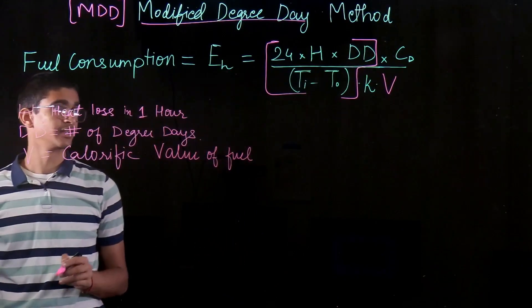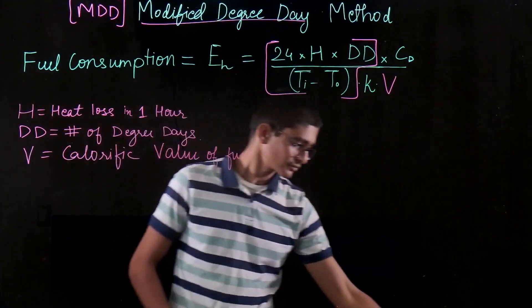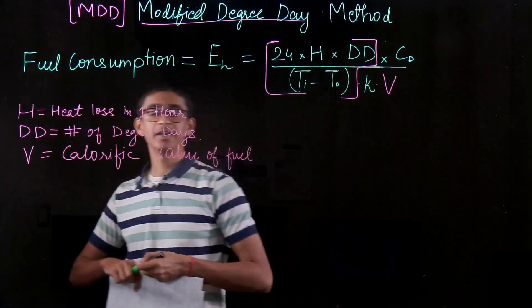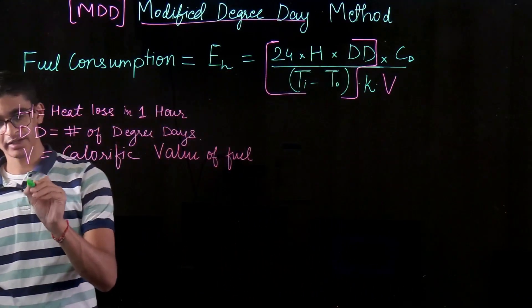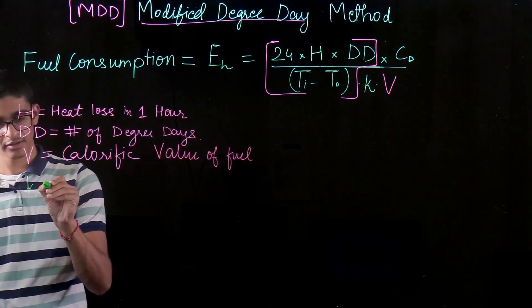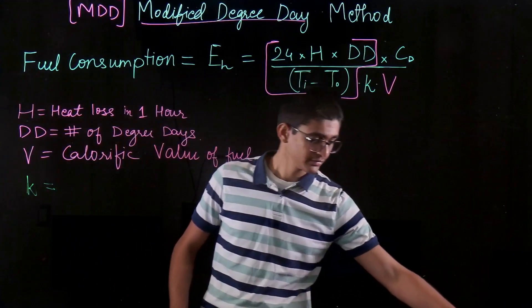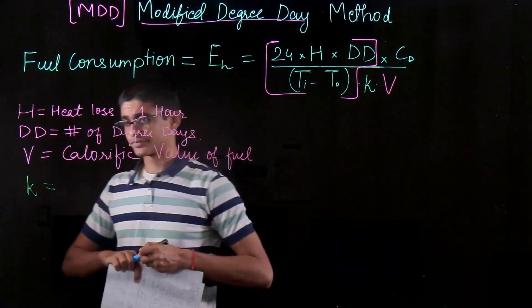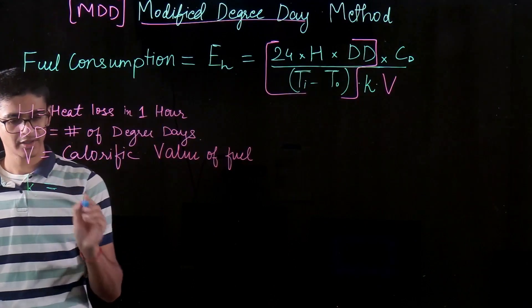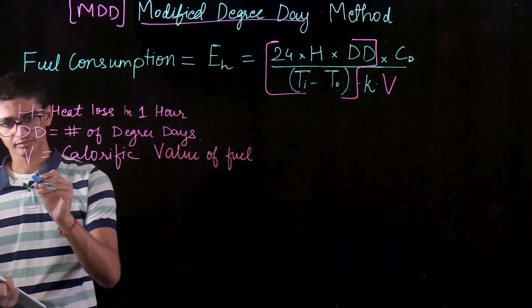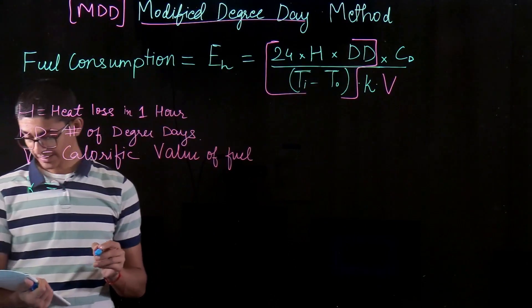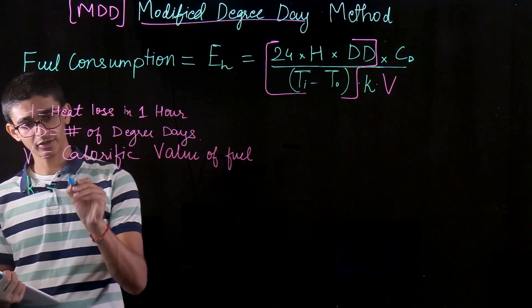Now the interesting thing comes up, which is the CD and K. So my K, I am sorry this is not as clear as I expected. So K is the factor of efficiency.